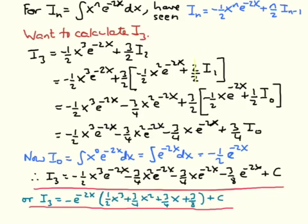The key step has been to apply the reduction formula repeatedly, expanding brackets at each stage to keep the algebra in small, manageable steps. On the final slide, I want to check this result is correct by differentiating it. Differentiating the factored form should be slightly easier, so that's the one I'll use.